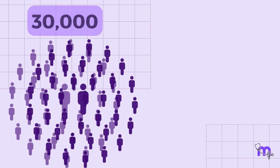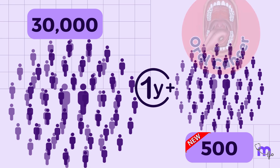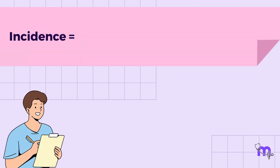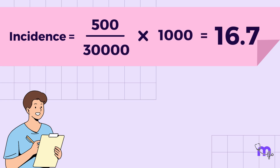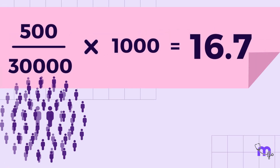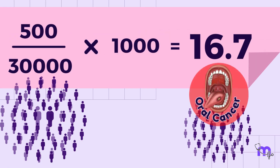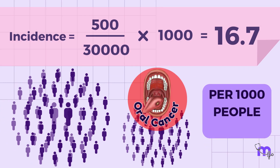For example, in a specific population of 30,000 people in a year, there were 500 new cases of oral cancer. By applying the formula, incidence = 500 / 30,000 × 1000 = 16.7. Thus, this implies that in this population of 30,000 people, there is an incidence of 16.7 cases of oral cancer per 1,000 people per year.